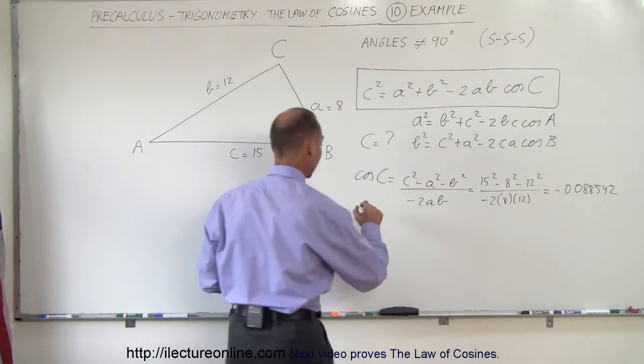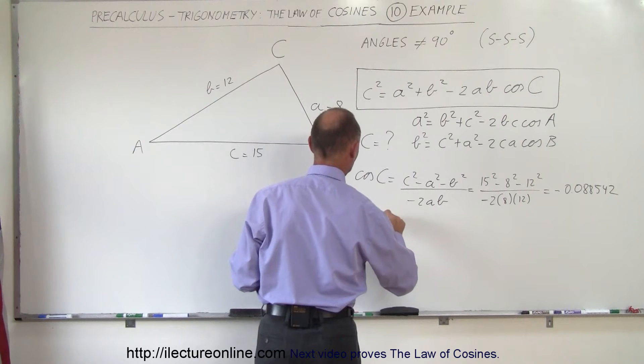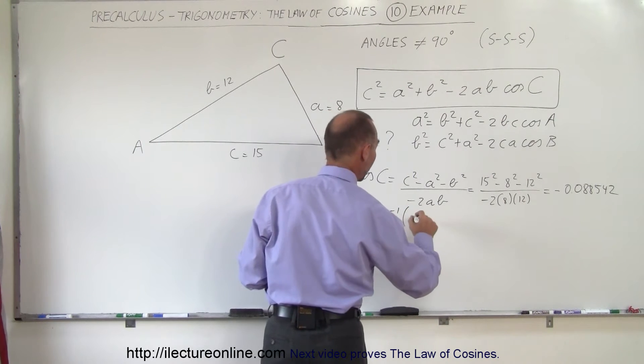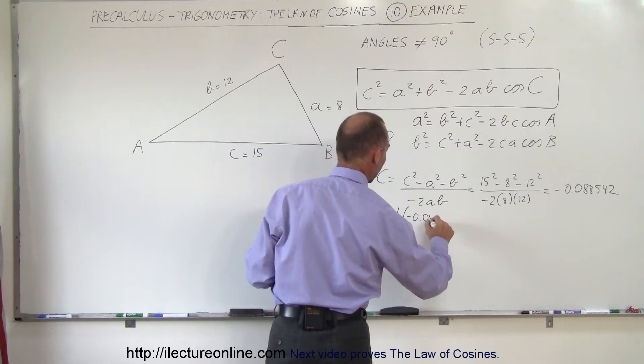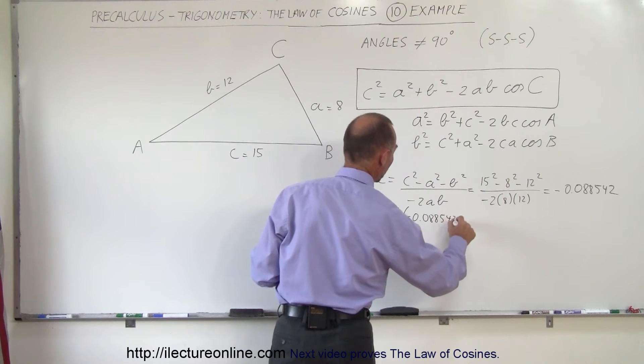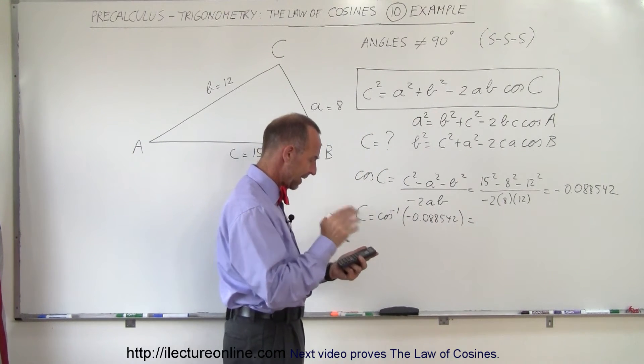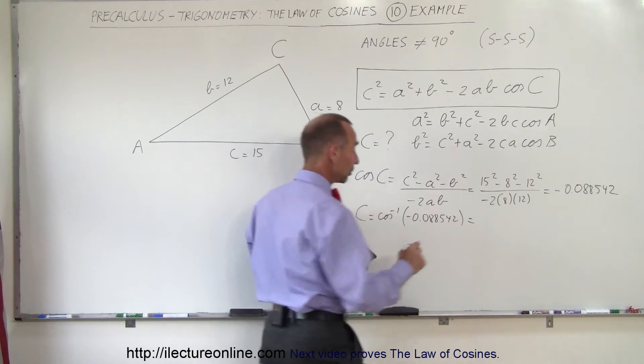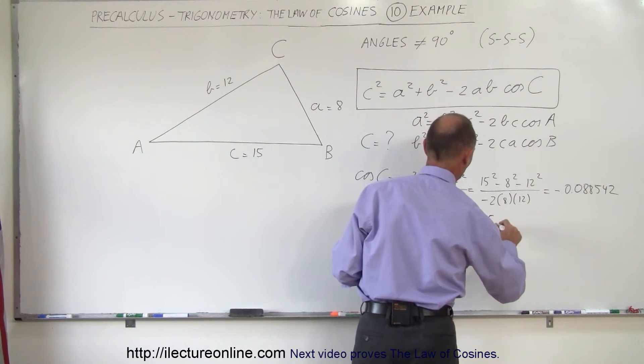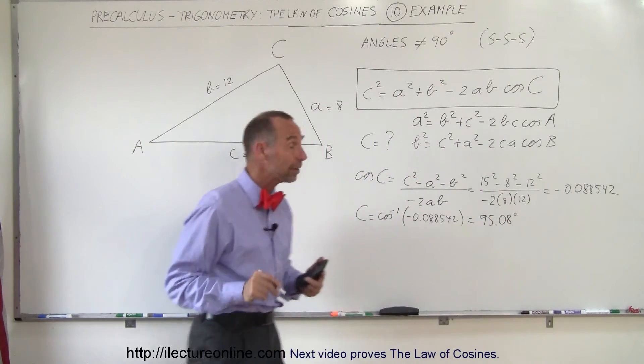Now let's take the arccosine of that, or inverse cosine. So angle C is equal to the inverse cosine of minus 0.088542. We get 95.08 degrees. That's our first angle.